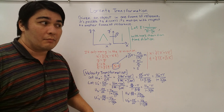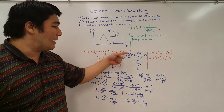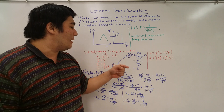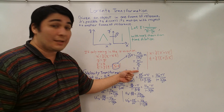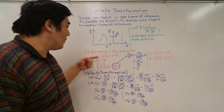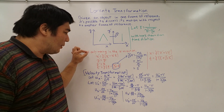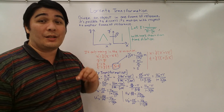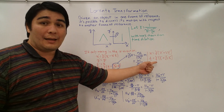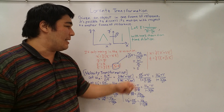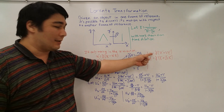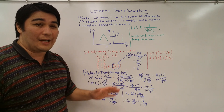You might wonder whether v over c squared times x gives units of time — and it does. When you convert v, c squared, and x to base units and work through the math, it comes out to seconds. I also noted the inverse functions of x-prime and t-prime. There's significant work involved in deriving x and t from x-prime, so I'll cover that in a separate video. For now I'll assume those results and move on.